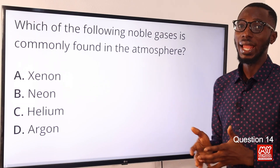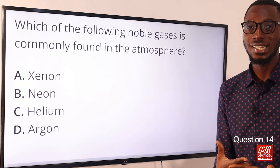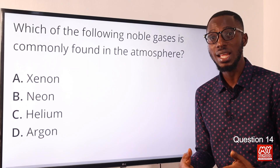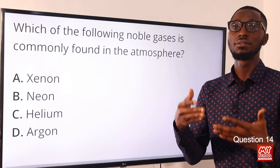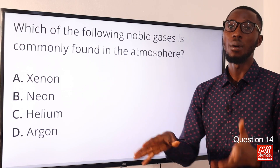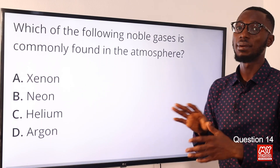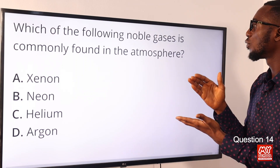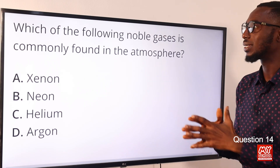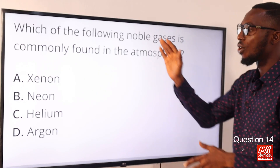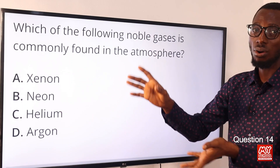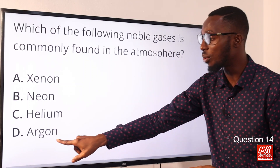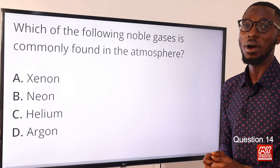Question 14: Which of the following noble gases is commonly found in the atmosphere? Air is a mixture of gases: oxygen, carbon dioxide, nitrogen, rare gases, dust, moisture. All the options listed belong to group 0 — noble gases or rare gases. The one found in air, at about 1.2% of the atmosphere, is argon. The correct option is option D for argon.